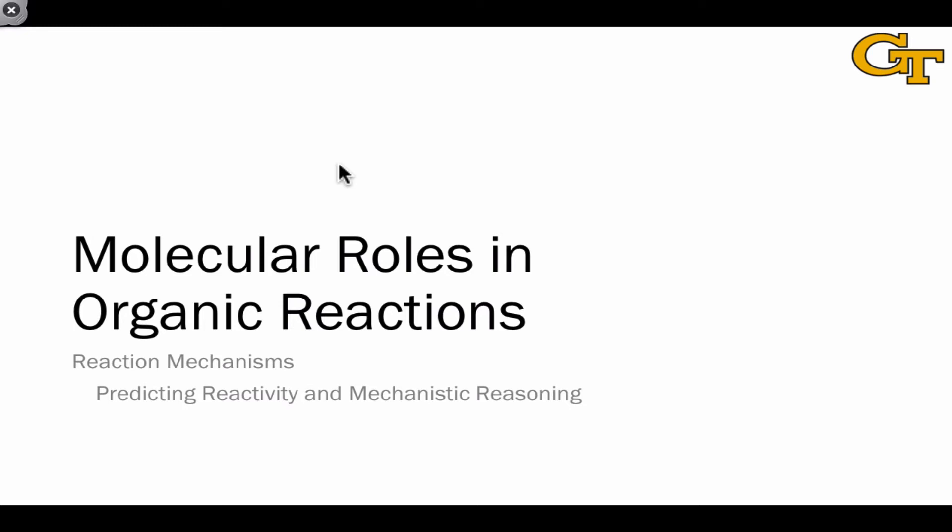When it comes to predicting the results of organic reactions, one important point to keep in mind is that molecules can only assume one of four possible roles in organic reactions: Lewis acid or Lewis base, Bronsted acid or Bronsted base. Identifying the roles played by reagents and substrates in organic reactions is one of the key first steps in mechanistic reasoning and product prediction.